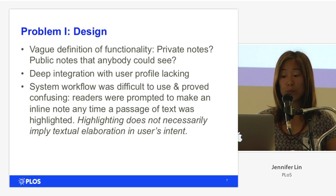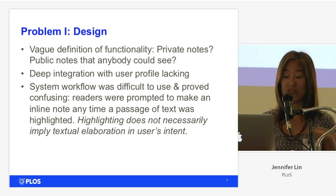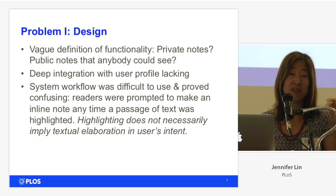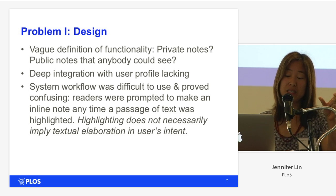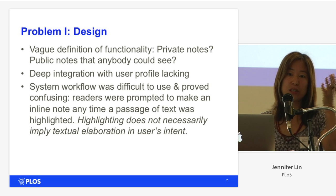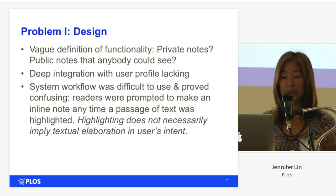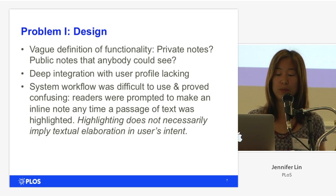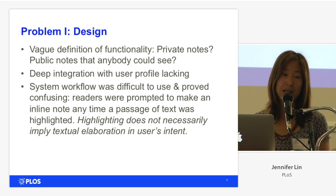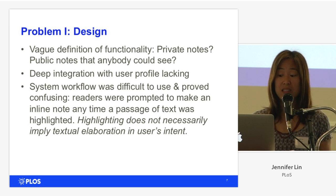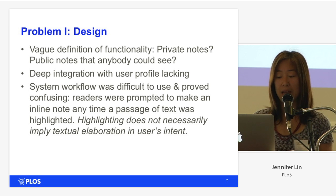For one example, readers were prompted to make an inline note any time a passage of text was highlighted. In fact, whenever you clicked on a piece of text — if you double-clicked, or clicked and moved without releasing — that highlight marked the text and a note was created. We know that highlighting does not necessarily imply textual elaboration on behalf of the user.